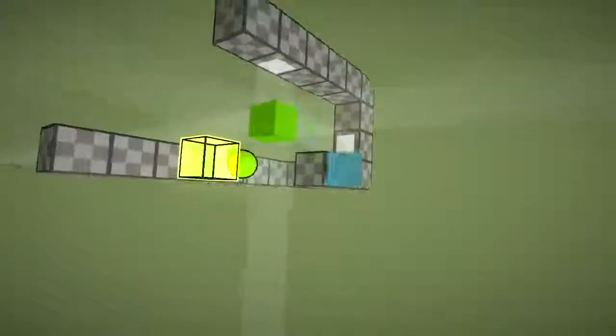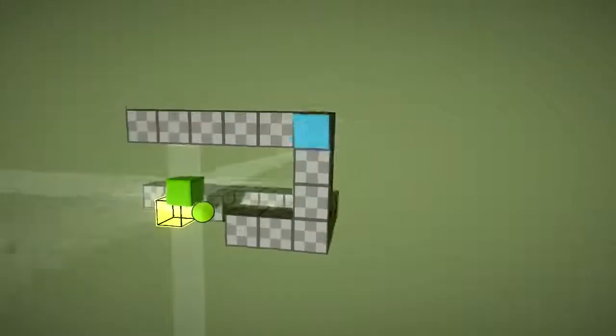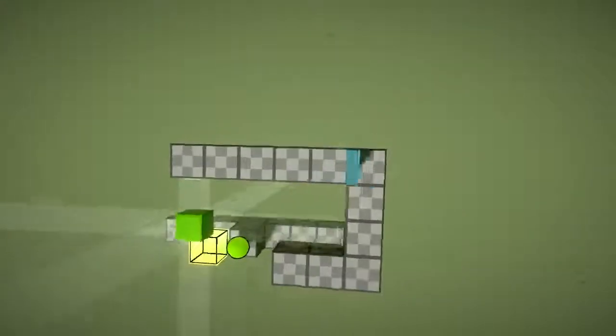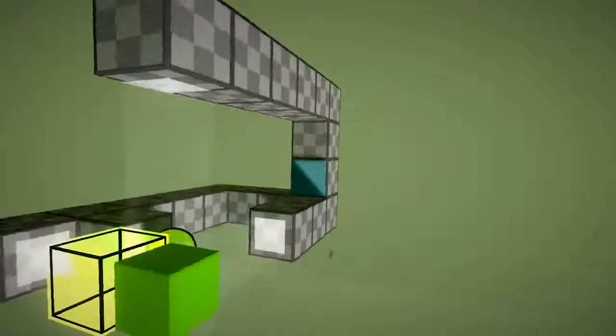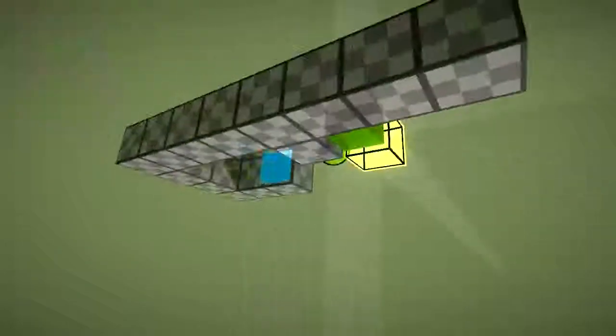Let's get the whale into position underneath the destination box. First line it up that way, then we'll line it up that way, and walk it down.